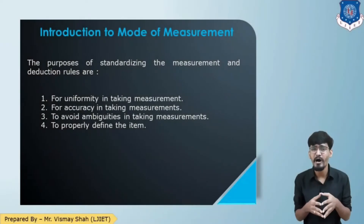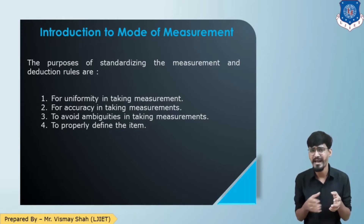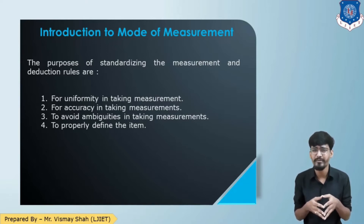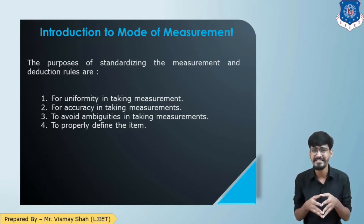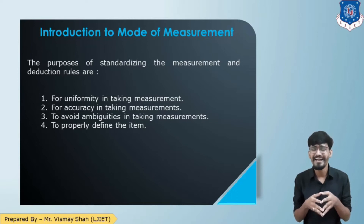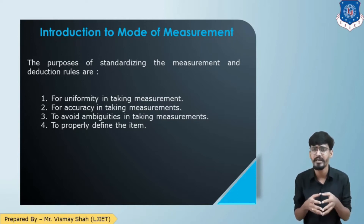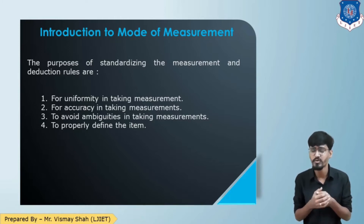The purposes of standardizing measurement and deductions are: first, for uniformity in taking measurements — by using the same method, you can have uniformity; second, for accuracy in taking measurements — following the same method everywhere ensures accuracy; third, to avoid ambiguities in taking measurements; and fourth, to properly define the item of work. That is why IS code is used and why it is so important.